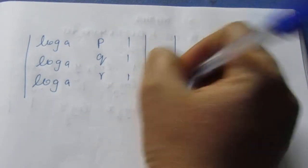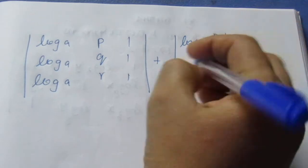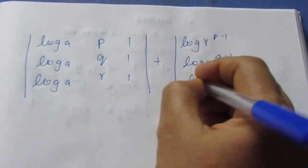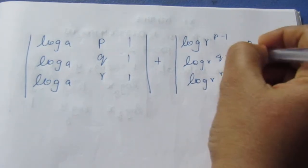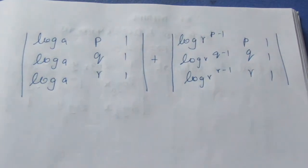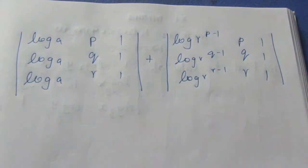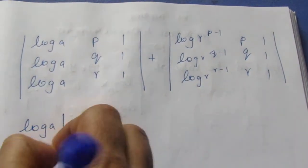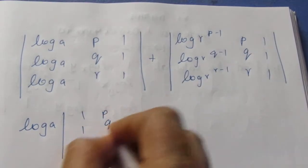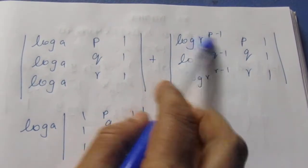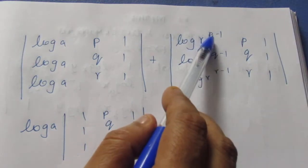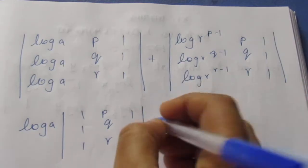So the determinant becomes: first row is log a + (P−1)·log r, log a + (Q−1)·log r, log a + (R−1)·log r; second row P, Q, R; third row 1, 1, 1. We split this and take log a common to get two separate determinants.